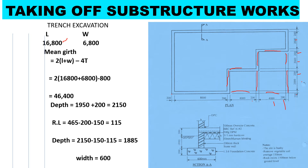To calculate the mini gut, we can either use the external or internal measurement. For this case we use the external measurement. The mini gut formula is 2 × (length + width) minus 4 × thickness. Our thickness is 200, so: 2 × (16,800 + 6,800) minus 4 × 200, giving us 46,400 millimeters. That is our mini gut.